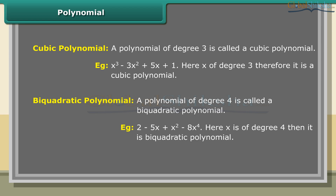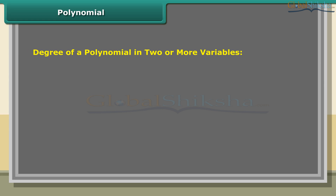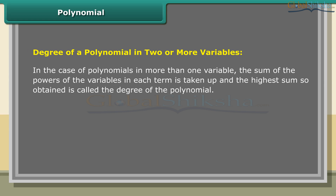A polynomial of degree 4 is called a biquadratic polynomial. Example: 2 − 5x + x² − 8x⁴, where x is of degree 4. In the case of polynomials in more than one variable, the sum of the powers of the variables in each term is taken, and the highest sum obtained is called the degree of the polynomial.